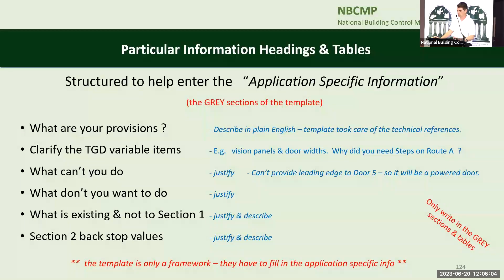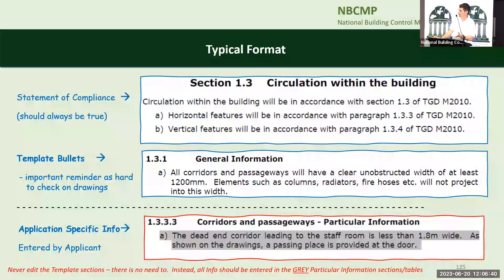For example, for circulation: 'circulation within the building will be in accordance with section 1.3 of technical guidance' — that's everything covered now. He's committed to everything. So horizontal will comply with 1.3.3, vertical will comply with 1.3.4. We put in a couple of bullet points we thought were important, like: 'all corridors and passages will have a clear unobstructed width of at least 1,200 millimetres; elements such as radiators and fire hoses will not project into the width.' So if he shows a corridor dimensioned 1,200 on the drawing, he's now committed it'll be 1,200 with nothing obstructing it. That's the template part — regardless of what the building is, there's no need to change that. The application-specific information then lets him say, for example, that on the second floor next to the staff canteen there is one narrow bit, here's what it is, here's why he couldn't avoid it, and here's what he's giving in compensation.